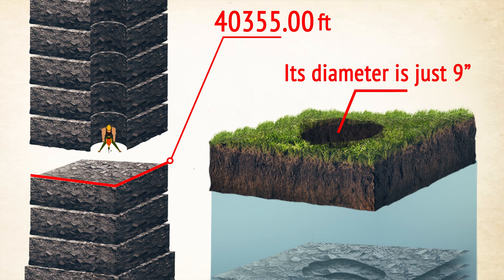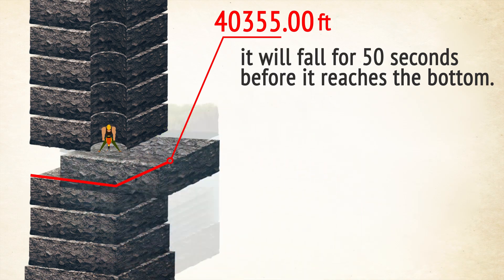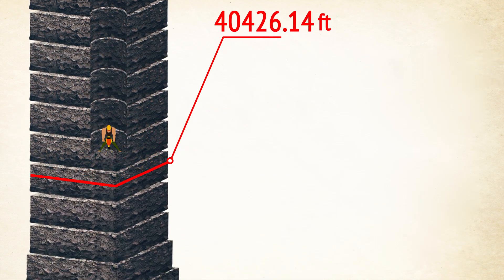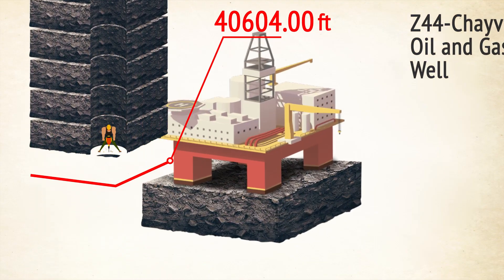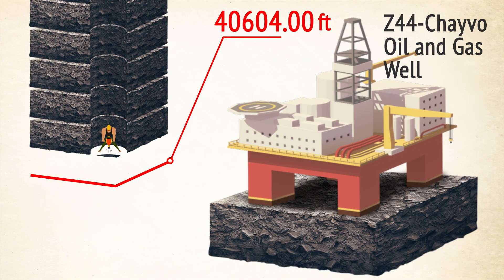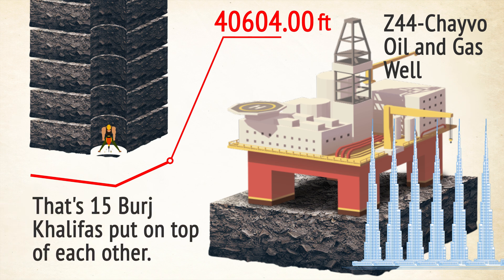If you drop a coin down the shaft, it will fall for 50 seconds before it reaches the bottom. And the winner in the category of the deepest artificial hole on Earth is Z44, Chayvo Oil and Gas Well. This shaft is drilled down to a whopping 40,604 feet. That's 15 Burj Khalifahs put on top of each other. The shaft is located in the Russian Far East.